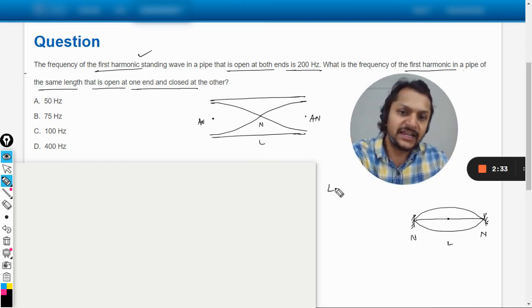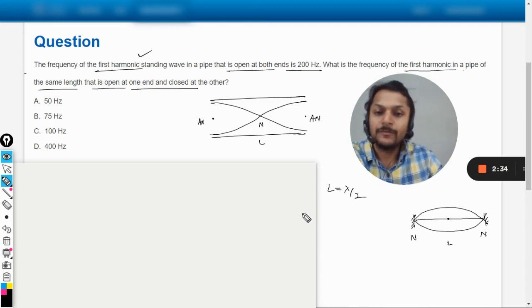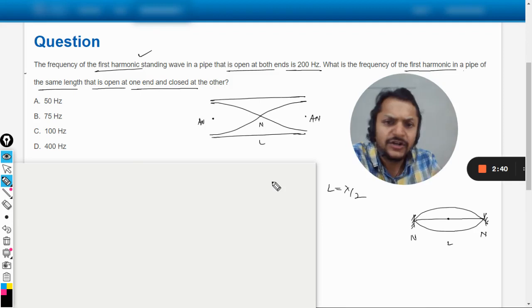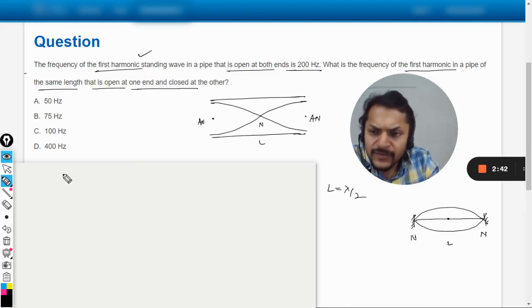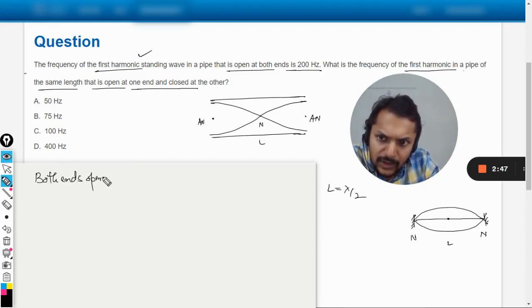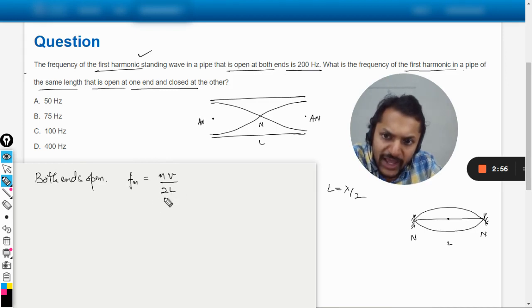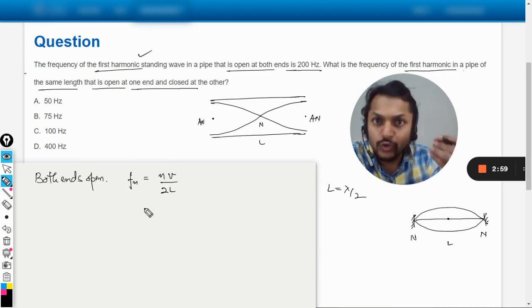So now let us go further. I'm not going into details here for this thing, I'm just saying that in the case of both ends open, we have this fundamental formula for the frequency: it is n into V divided by 2L.